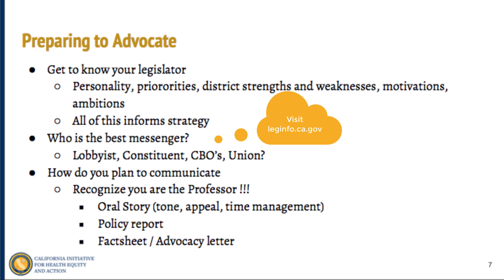Another way to communicate is having a policy report at hand. If there's a published policy report on bail reform, bringing it to a staffer is very beneficial — they'll see you've done your research and have objective facts they can present to their member. One of the most common ways these things are communicated is through a fact sheet or advocacy letter, which we'll go into more detail on later in this webinar.